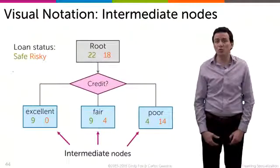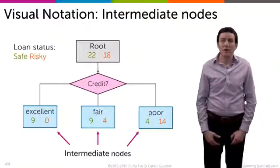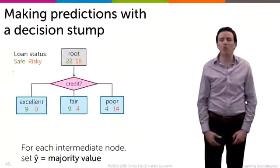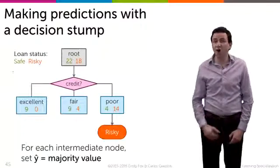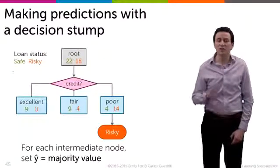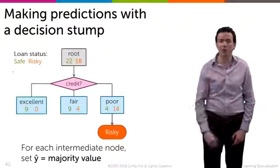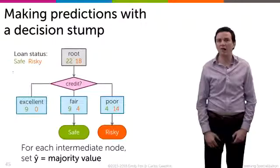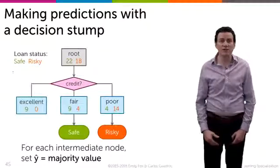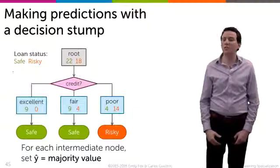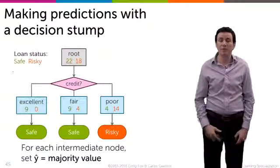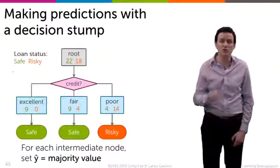These nodes in the middle we call intermediate nodes. For each intermediate node, we can try to make a prediction in the decision stump. For poor credit, we see the majority of the data has risky associated with it, so we predict that to be a risky loan. For fair credit, the majority — nine versus four — were safe loans, so we predict safe. And for excellent credit, we predict safe because nine versus zero, so nine safe loans. For each node, we look at the majority value to make a prediction.